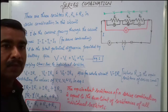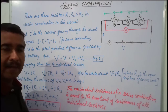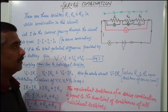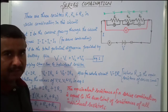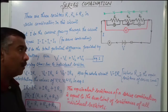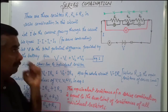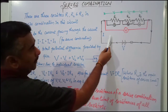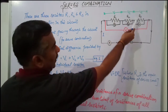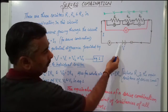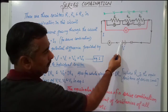Dear students, today we are going to derive the expression for finding out the equivalent resistance of a series combination of resistors. For the derivation, we have considered a series combination in which there are three resistors R1, R2, and R3, and a source of potential difference — a battery made of two cells.